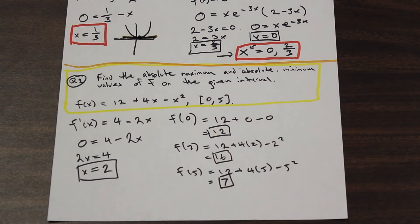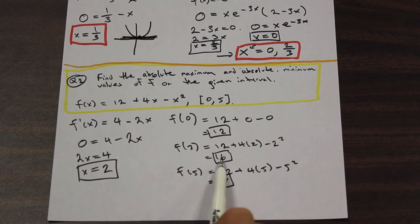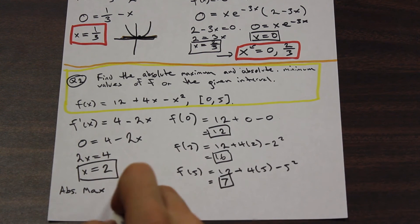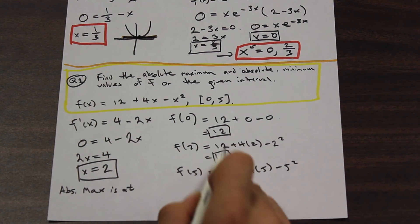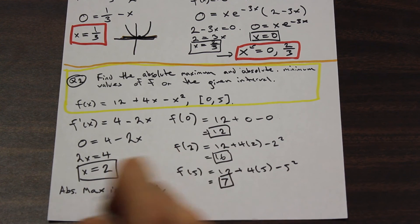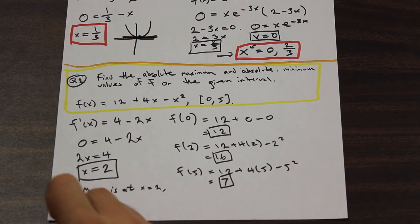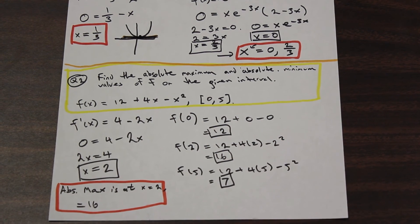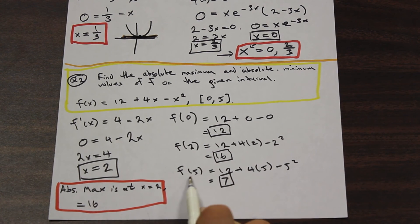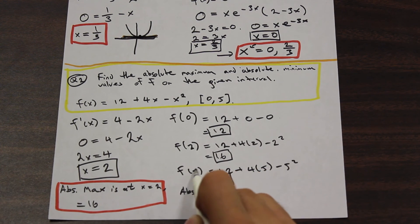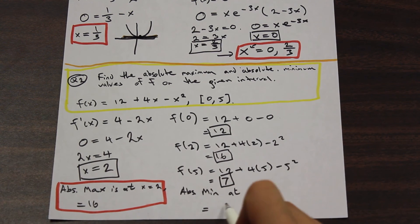Out of these three values, we take the largest number — that is going to be our absolute maximum value. The absolute maximum occurred at x equals 2 and it equals 16. For our absolute minimum, we select the smallest number: it occurs at x equals 5 and equals 7.